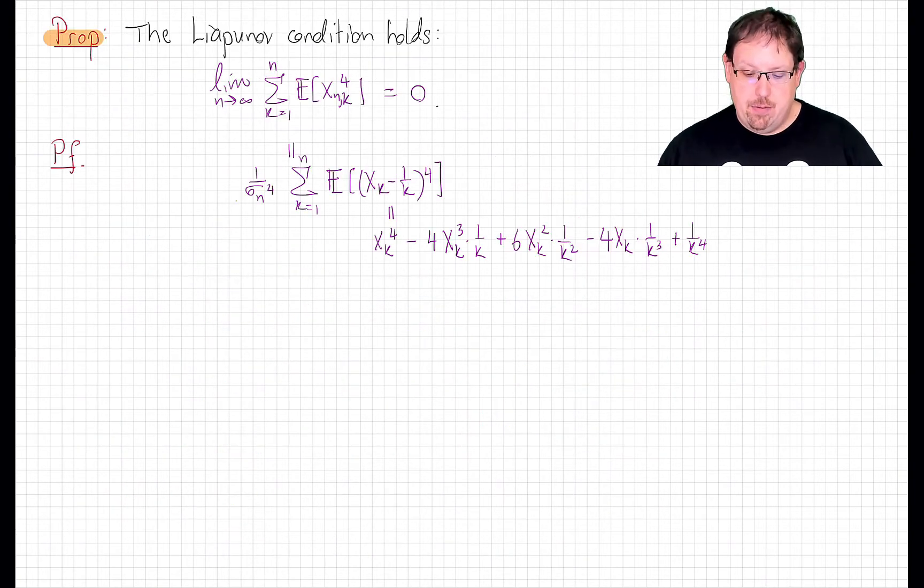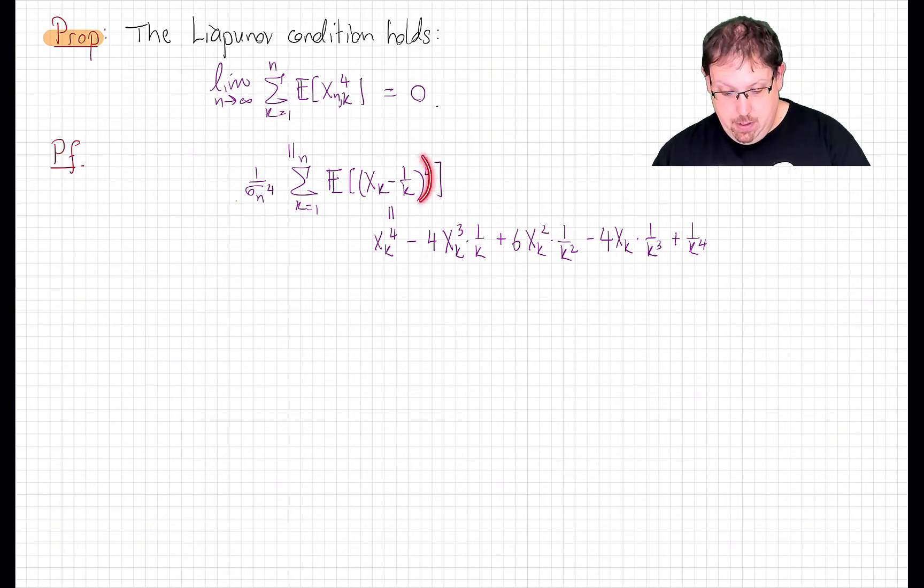Normalizing as we have to form a standard triangular array, the sum of the fourth powers along each row will tend to zero. To prove that, we just expand the fourth power of X_nk is X_k minus 1 over k to the fourth divided by sigma_n to the fourth.